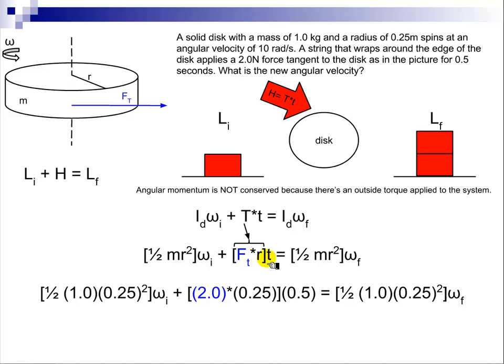we're going to multiply that times t to get this value here. This is the value of H, which is our angular impulse.